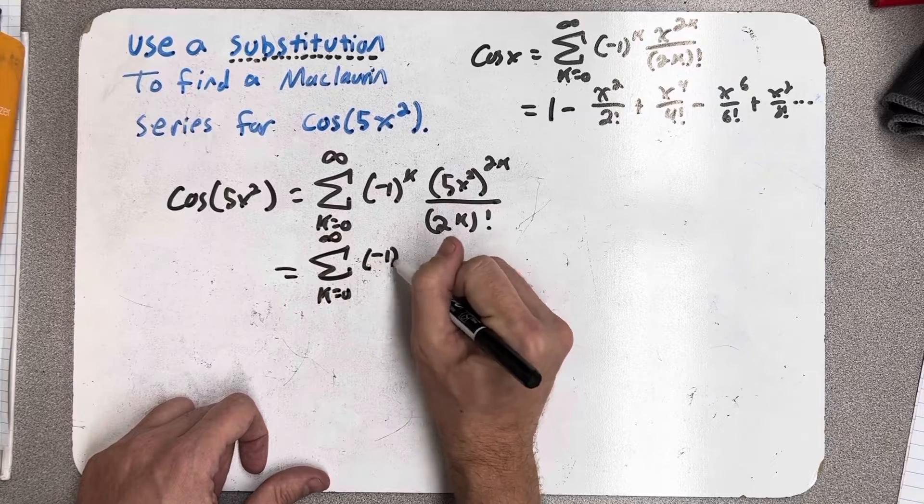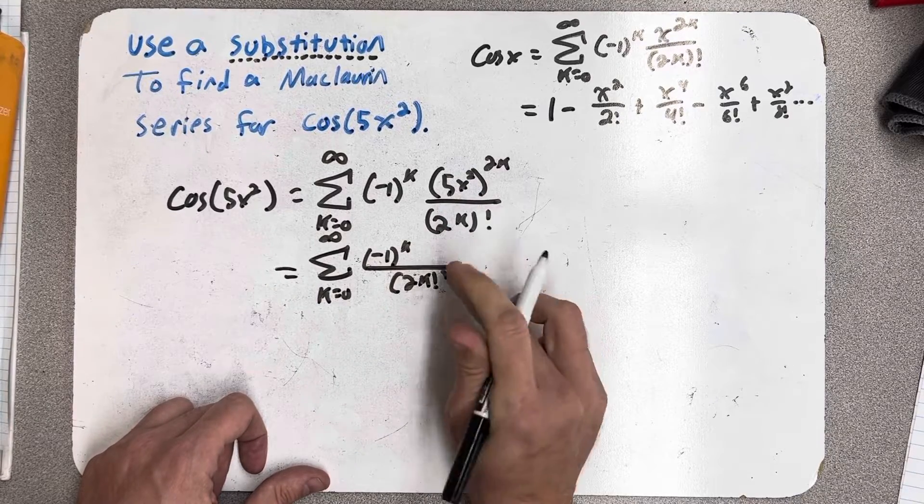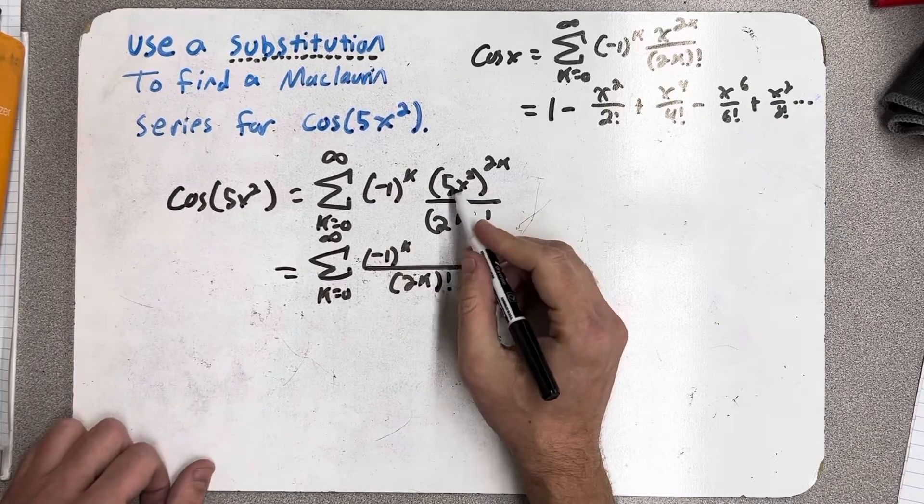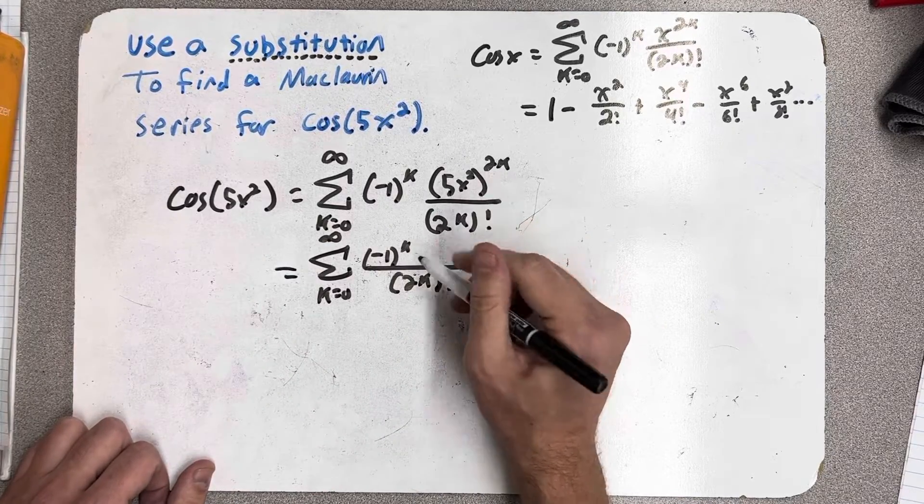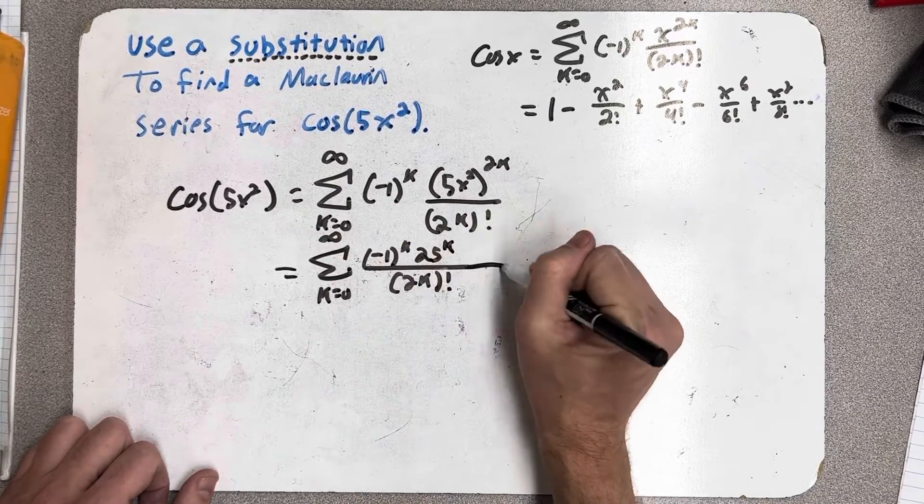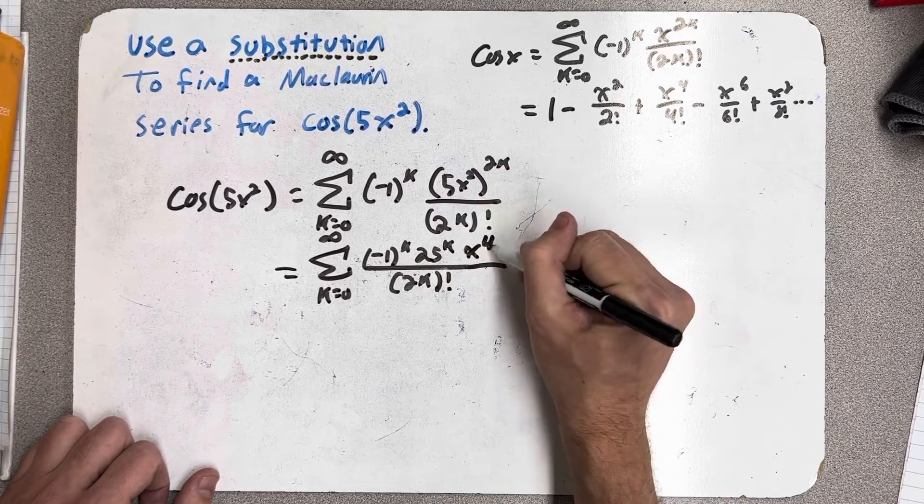So, I have minus 1 to the k, and I will be dividing by 2k factorial. But let's see, here I would have 5 raised to the 2k. Well, that would be 5 squared raised to the k, so 25 to the k. And then x squared raised to the 2k, I'm going to write as x raised to the 4k.